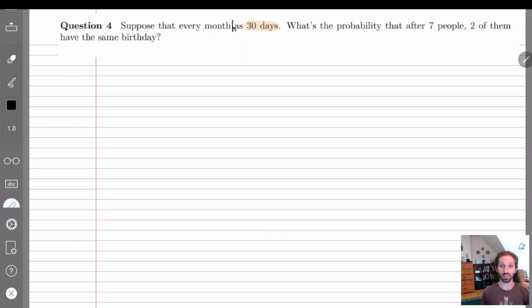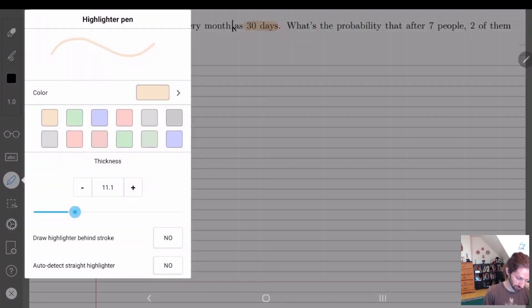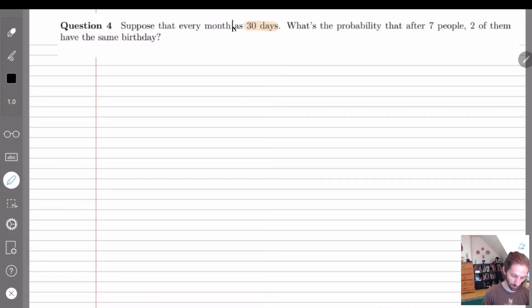So let's keep track of this information so let's highlight 30 days is kind of the pertinent information here. What's the probability that after seven people, so here we're actually already going straight to the question, two of them have the same birthday as in like the day of the month?